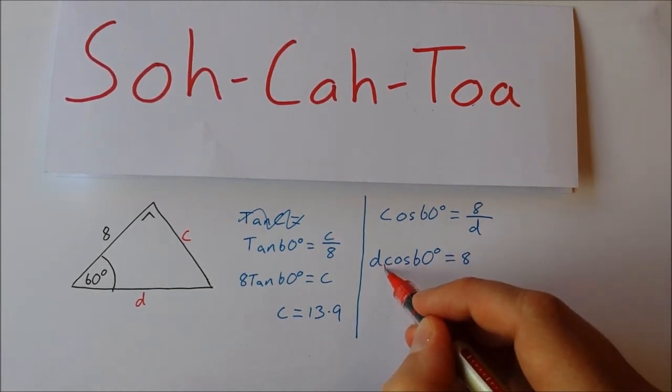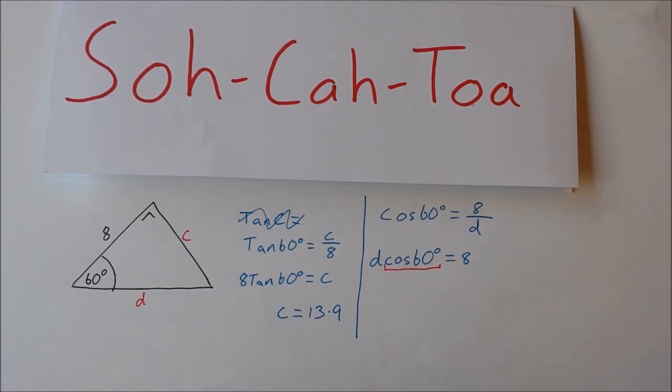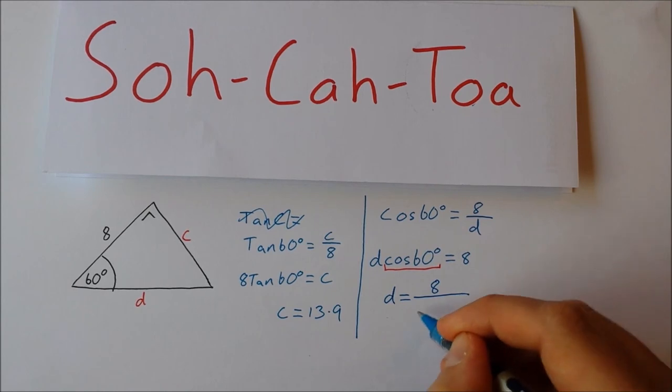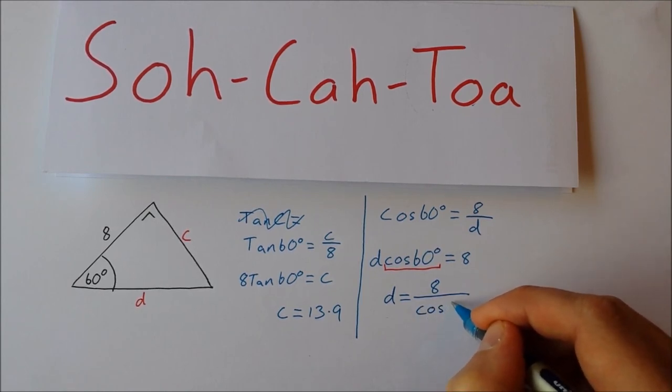Now I've got rid of my fraction, but now I want to get rid of cos 60. So I'm going to divide by cos 60. That gives me d = 8 divided by cos 60.